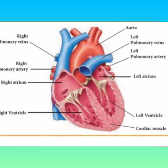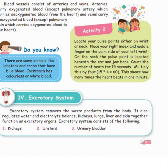Now the excretory system. The excretory system removes the waste products from the body. It also regulates the water and electrolyte balance. The excretory organs are the kidneys, lungs, liver, and skin, which together function as excretory organs.